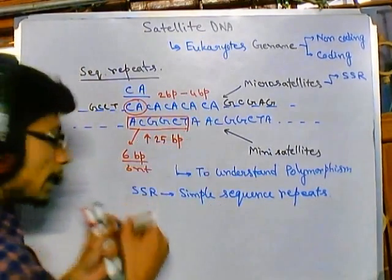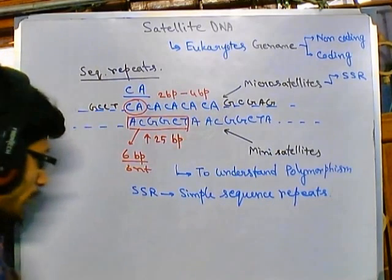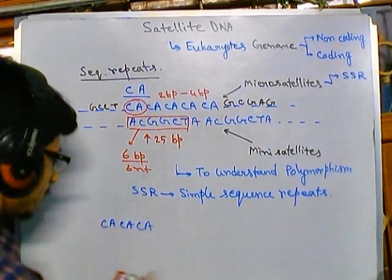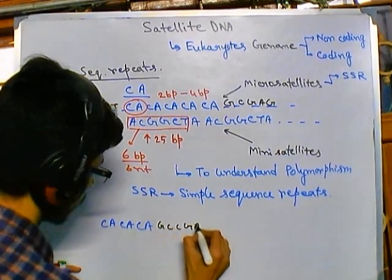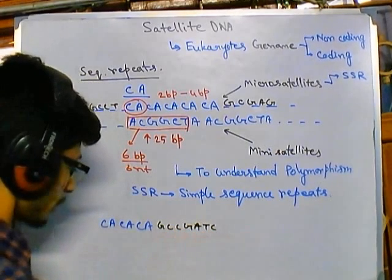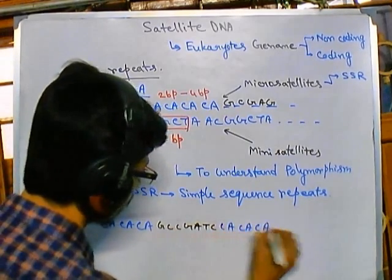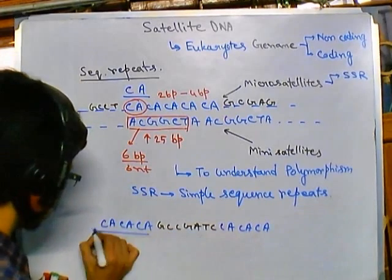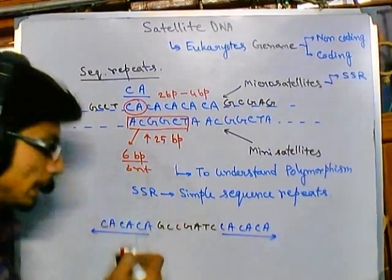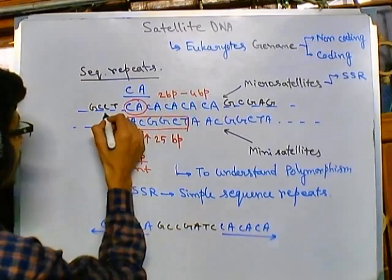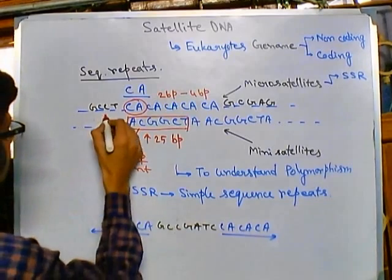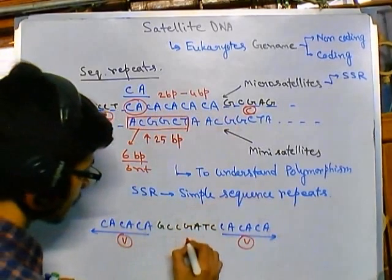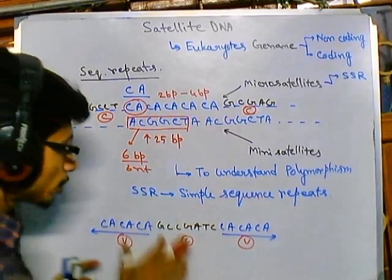There is another type of repeat. Imagine we have C-A-C-A-C-A on one side, then a constant region like G-C-C-G-S-T-C in the middle, and then C-A-C-A-C-A again on the other side. In this case the repeat regions are at the terminal sides and the constant region is in the middle — the opposite of SSR. Here the terminals are variable and the middle part is constant.